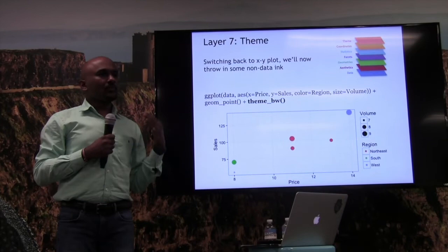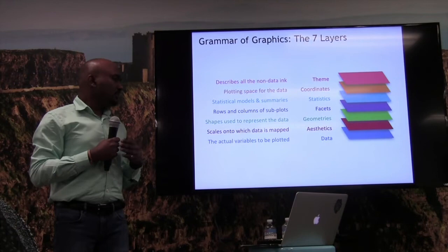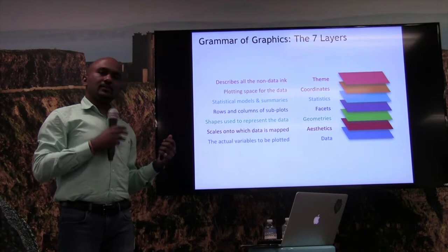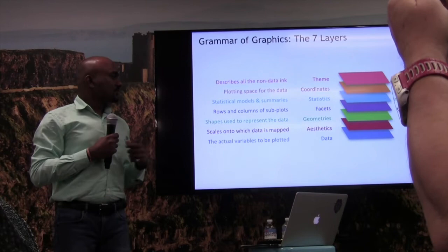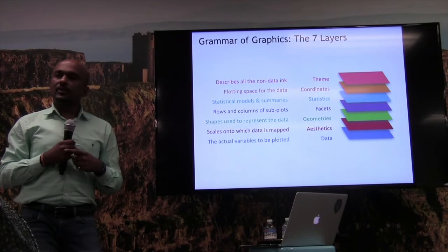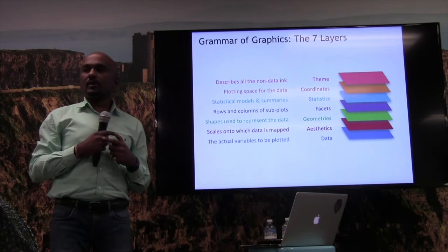These are the 7 layers of the grammar of graphics. To summarize: data is where we bring in the actual variables; aesthetics is where we have the scales like size, color, and axis; geometries is where we bring in the shapes — points, lines, and so on; facets is where we have rows and columns for side-by-side plots; statistics is where we do computation on the data; coordinates is the plotting space; and finally, theme describes all the non-data ink.